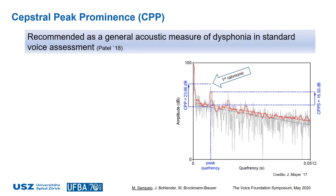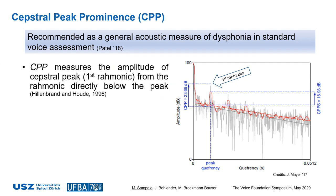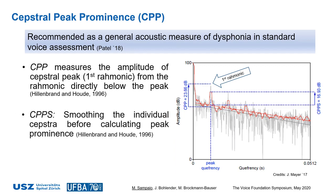in short, CPP, has been recommended as a general acoustic measure of dysphonia in standard voice assessment, along with so-called traditional acoustic measures such as jitter and shimmer. CPP measures the amplitude of the cepstral peak, relative to the first rahmonic from the rahmonic directly below the peak. An alternative cepstral measure is the smoothed CPP, which adds the process of smoothing the cepstra before calculating the peak prominence.